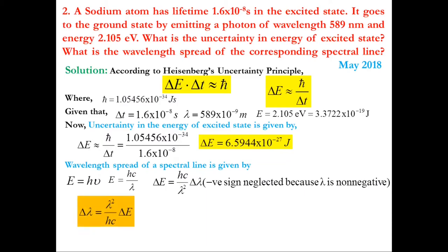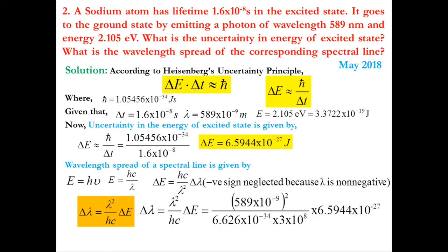Substituting values for λ, ΔE, h, and c (velocity of light = 3×10⁸ m/s), we get Δλ = 1.151×10⁻¹⁴ m. This is the required wavelength spread of the spectral line emitted when a sodium atom transitions from the excited state to the ground state.